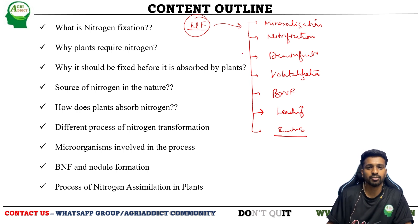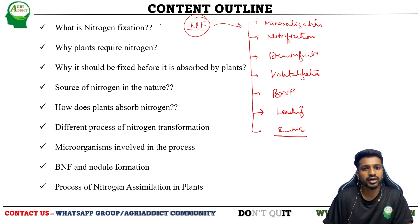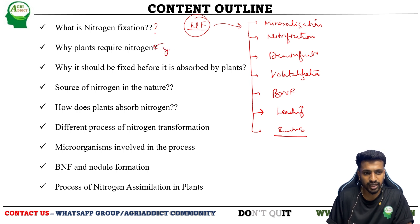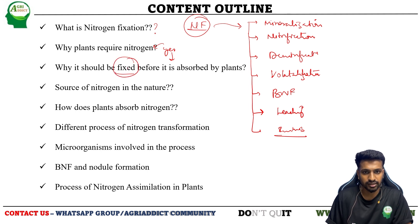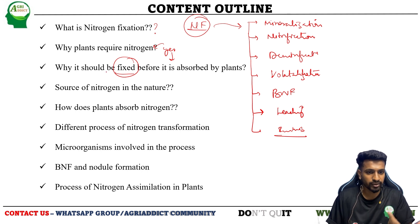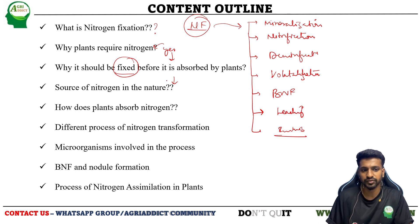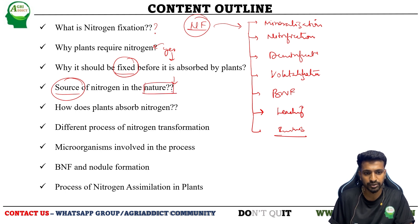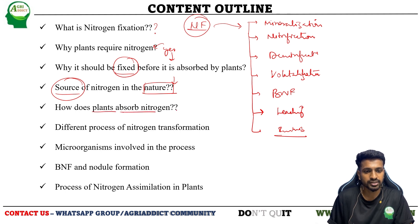Before directly jumping into these processes, we will understand what exactly nitrogen fixation is and why plants require nitrogen. If they require it, how is it assimilated by the plants? Before that, we'll see what 'fixed' means — why nitrogen should be fixed before it is absorbed by the plants, and in what form or from what sources the nitrogen is available in nature.